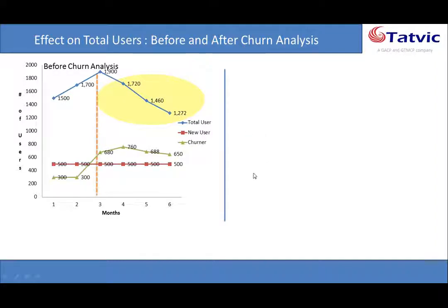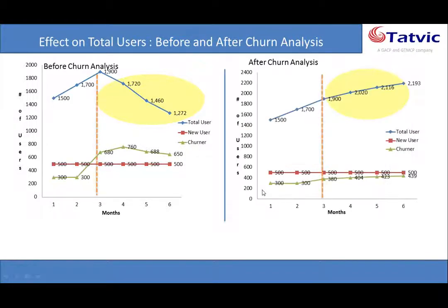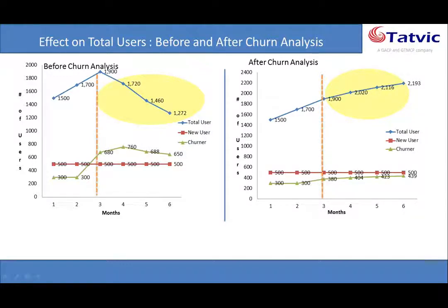Correct me if I am wrong, Rakesh, but are we trying to conclude that if we decrease our churn rate, we would have a higher number of users at the end of six months, with a substantial impact on revenue as well as customer growth? Yes, definitely. Post applying churn analysis — after three months — there is a significant increase in your graph. You started with 1,500 users and by end of the sixth month you end up with approximately 2,193. This is how churn analysis comes into the picture, and post applying it, you can see a significant increase in total subscriptions even though you have retained churners.